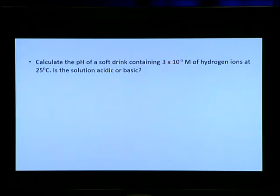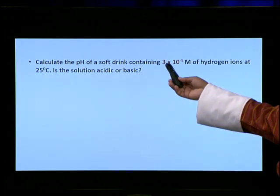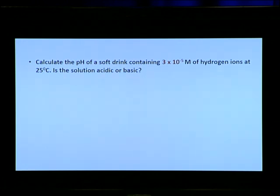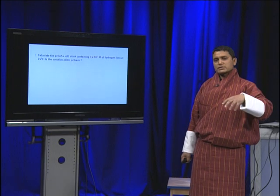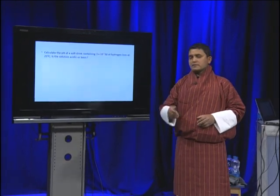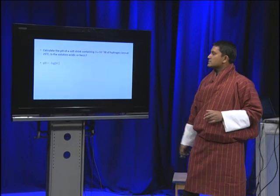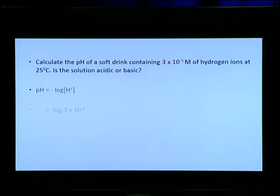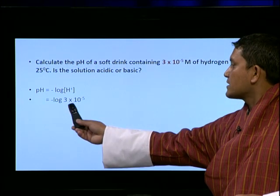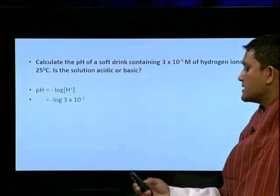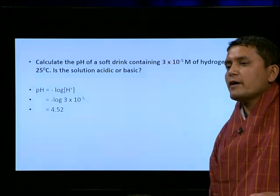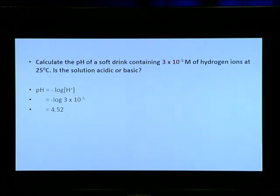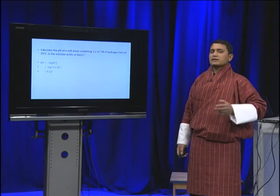How do we calculate pH of a given solution? For example, if you are given a soft drink in which we have 3 × 10 to the power minus 5 moles per liter of hydrogen ion, how do we calculate the pH at 25 degrees Celsius? Using the formula pH = -log[H+] and substituting the value of hydrogen ion concentration, we get the answer as 4.52. That means the drink has a pH of 4.52, which is acidic in nature.